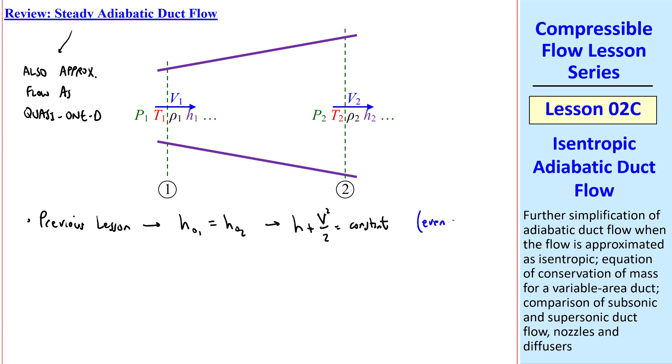And this holds even if the flow is not isentropic. Now let's differentiate this equation. We get dH plus 2V dV over 2 equals 0, since the derivative of the constant is 0. And the 2's cancel out, giving us dH equal negative V dV. I'll call this equation 1.